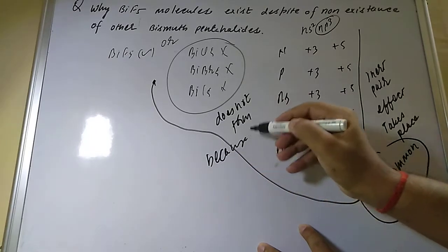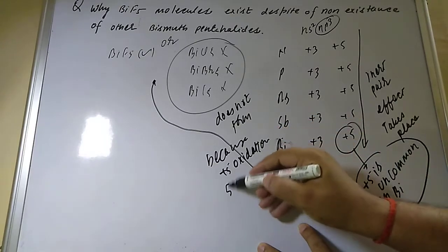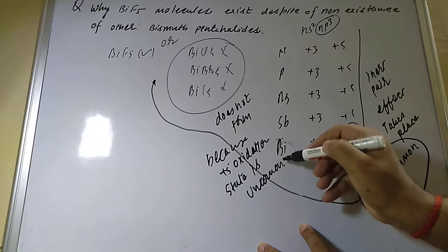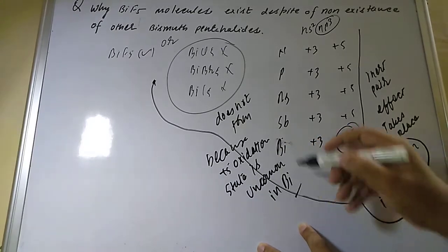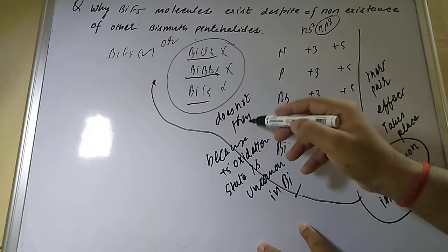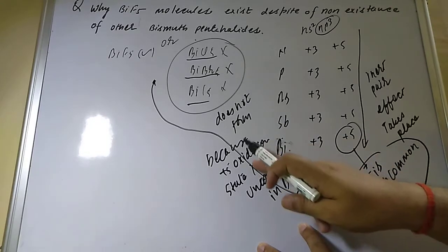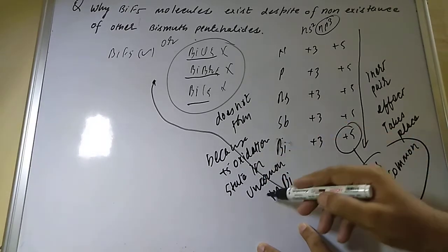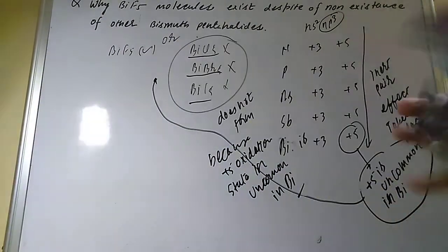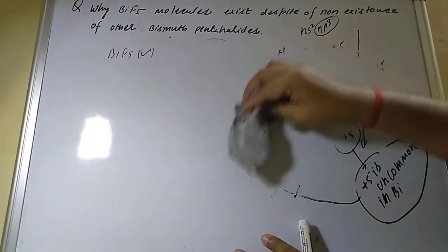The reason these compounds — BiCl₅, BiBr₅, BiI₅ — are not possible is that the +5 oxidation state in bismuth is uncommon due to the inert pair effect. However, BiF₅ is possible.